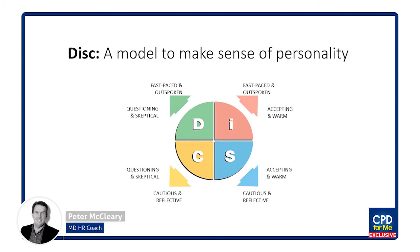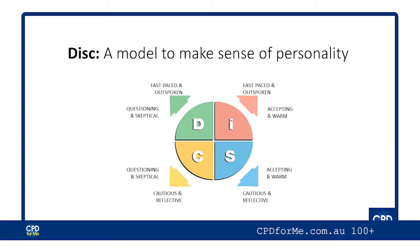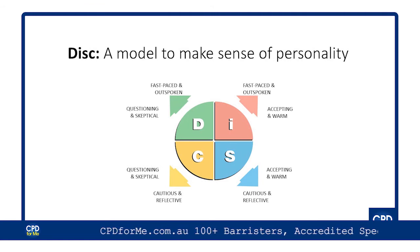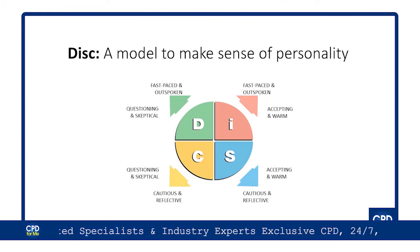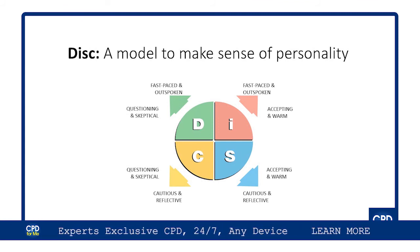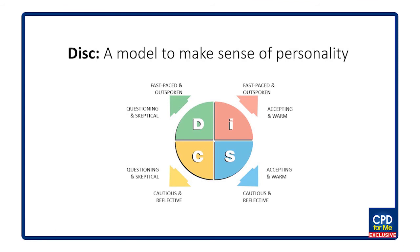In DISC, D people are fast paced, outspoken, questioning and skeptical. The D stands for Dominant — they come across to everyone else as a dominant person. If they're in the I space — fast paced, outspoken, accepting and warm — they influence people. They are often seen as inspiring people. They don't see any problems in anything; everything's an opportunity for something different.